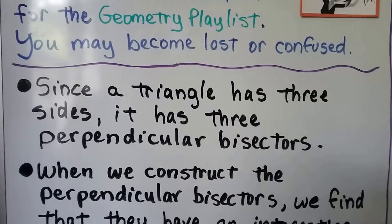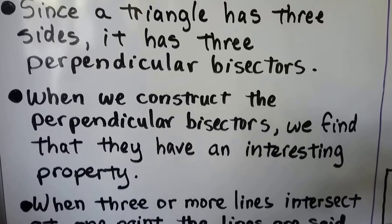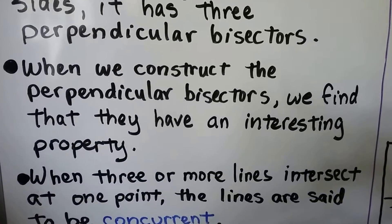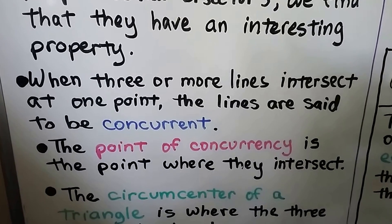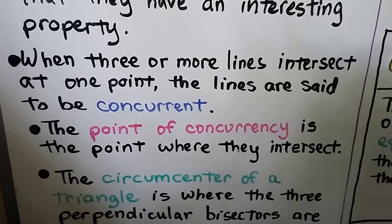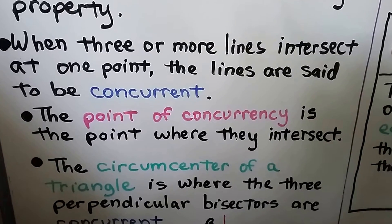Since a triangle has three sides, it has three perpendicular bisectors. When we construct the perpendicular bisectors, we find they have an interesting property. When three or more lines intersect at one point, the lines are said to be concurrent. The point of concurrency is the point where they intersect.